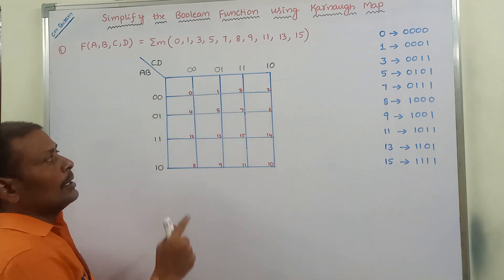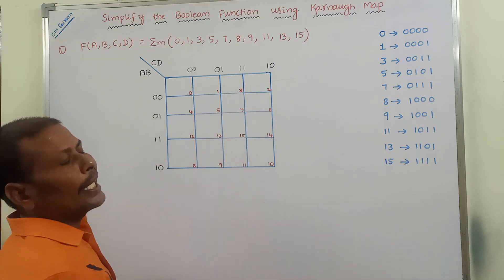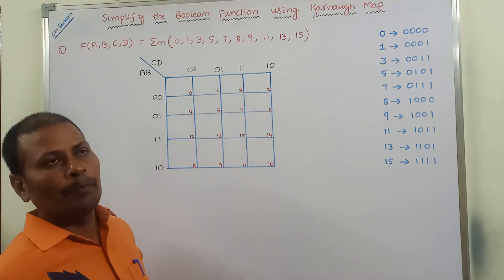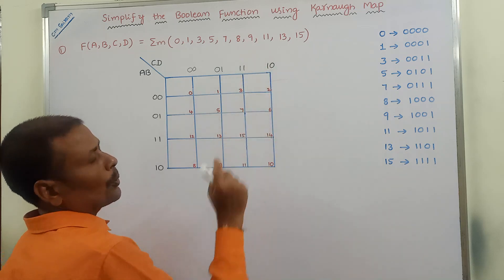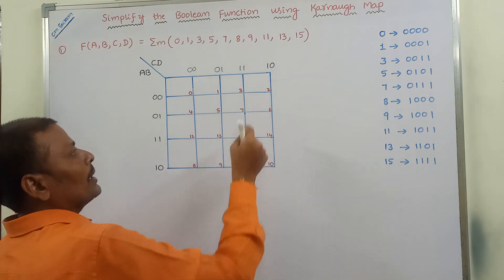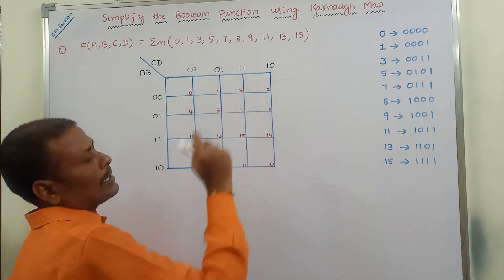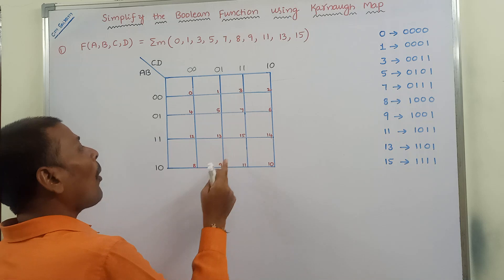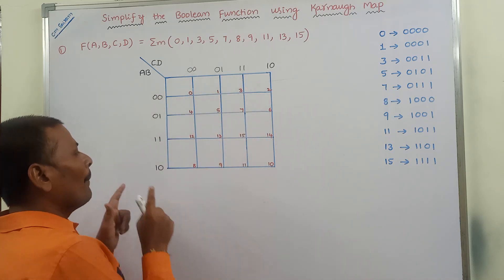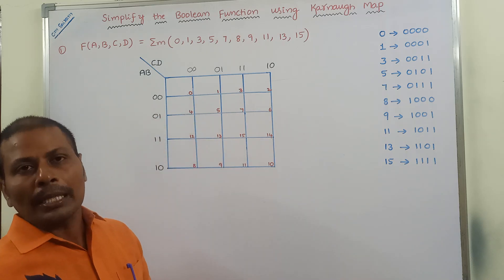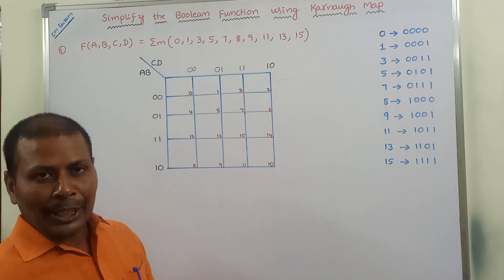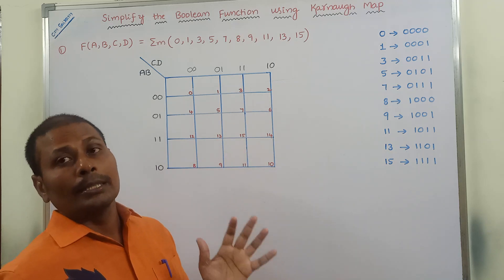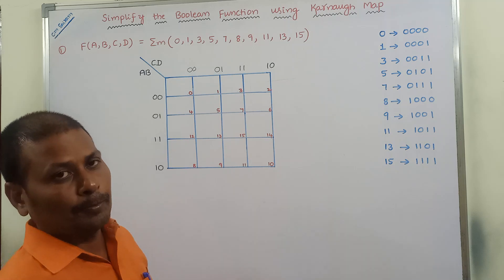0010 — the equivalent decimal value is 2, so 2 is represented as the cell number for that box. In this way, we have to write the cell numbers for all 16 cells in the four-variable Karnaugh map by taking the row-wise and column-wise combination and finding the equivalent decimal value. Whatever decimal value we get, that value is placed in the corner of the box as the cell number.